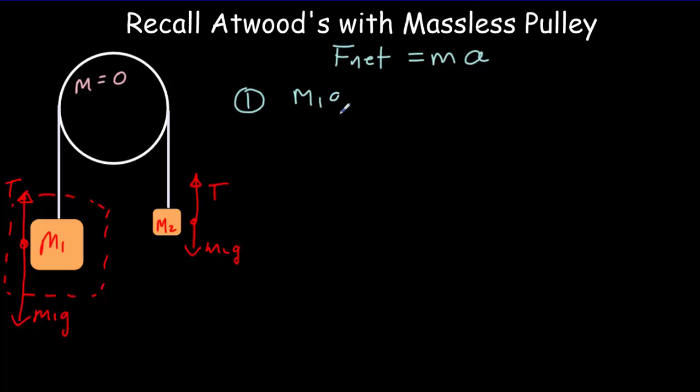For body 2, it's the tension that's bigger, so we write it first. T minus M2g must equal M2 times A.